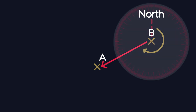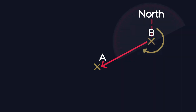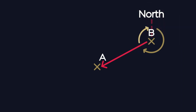If you do not have a 360 degree protractor, you can measure the smaller missing angle, then subtract this value from 360. For example, if the missing angle was 110 degrees, then the bearing of A from B will be 360 degrees minus 110 degrees, which equals 250 degrees.